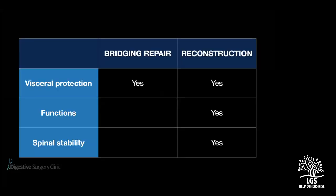If there is only one slide to remember about bridging repair versus reconstruction: bridging and reconstruction both give visceral protection. However, as far as functional restoration and spinal stability are concerned, it is only reconstructive techniques like component separation that can provide these advantages. The bridging repair fails to provide any function or spinal stability when repairing large defects.